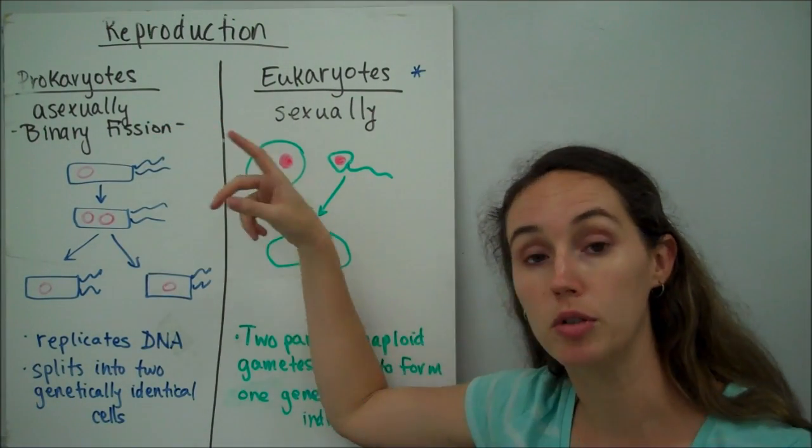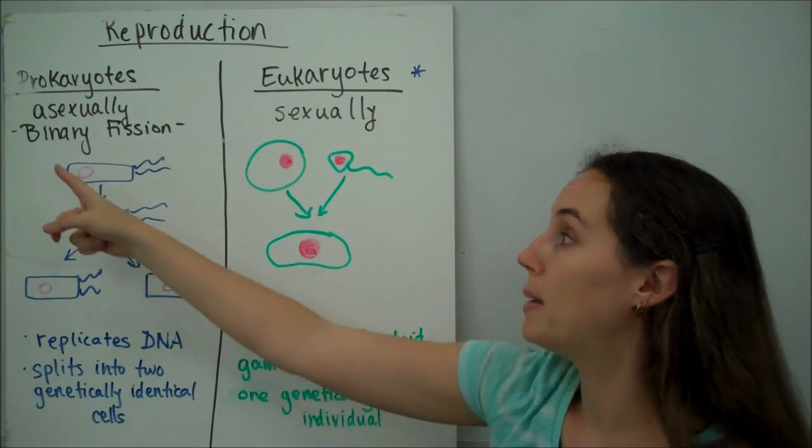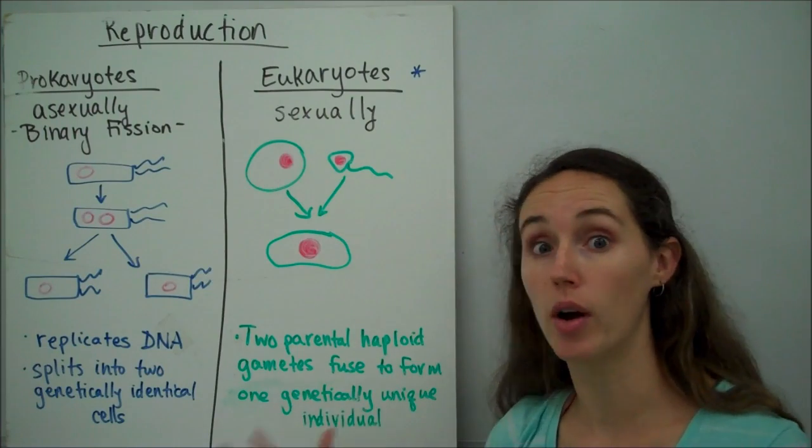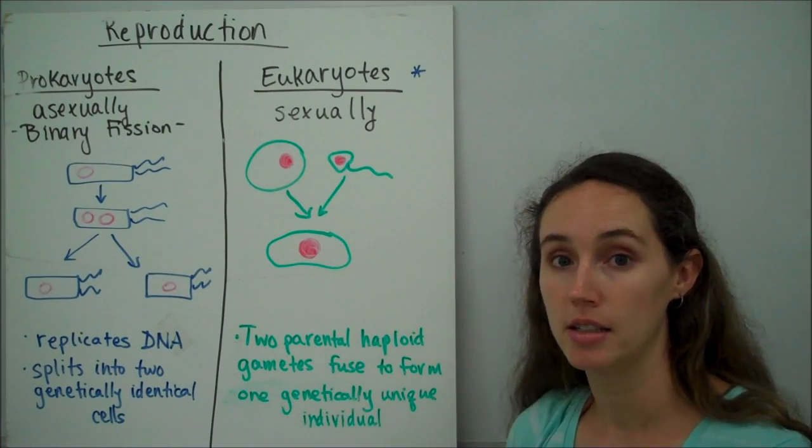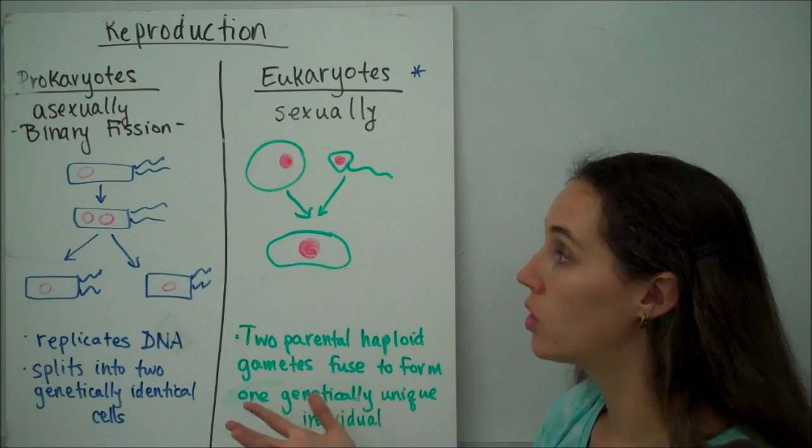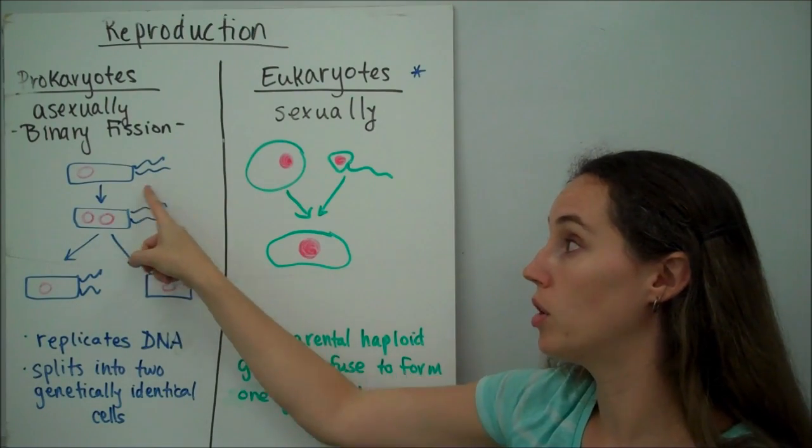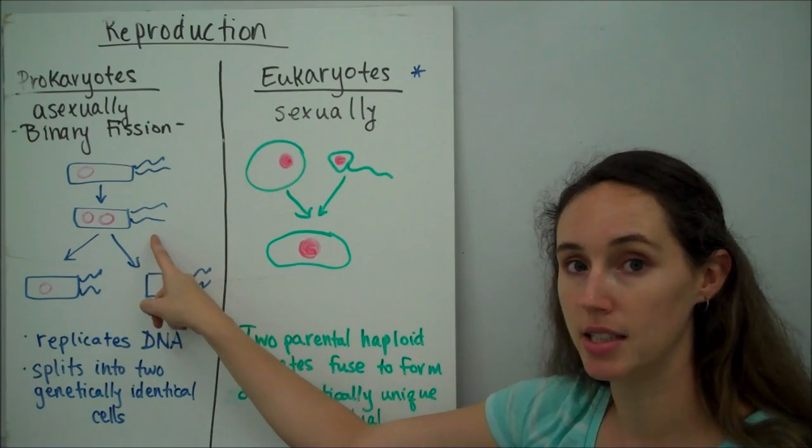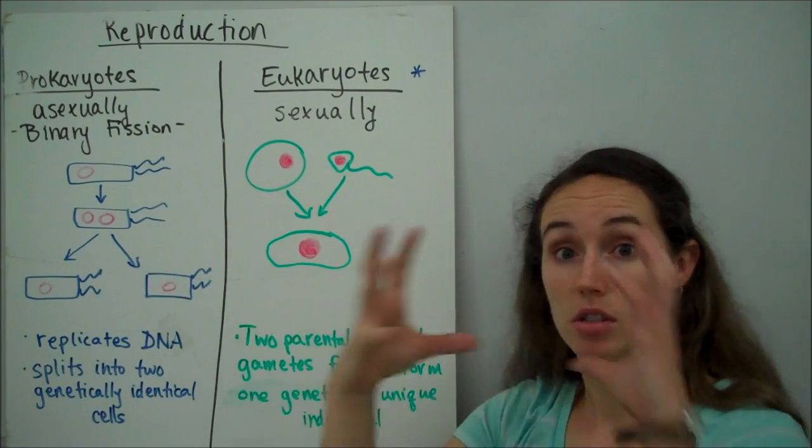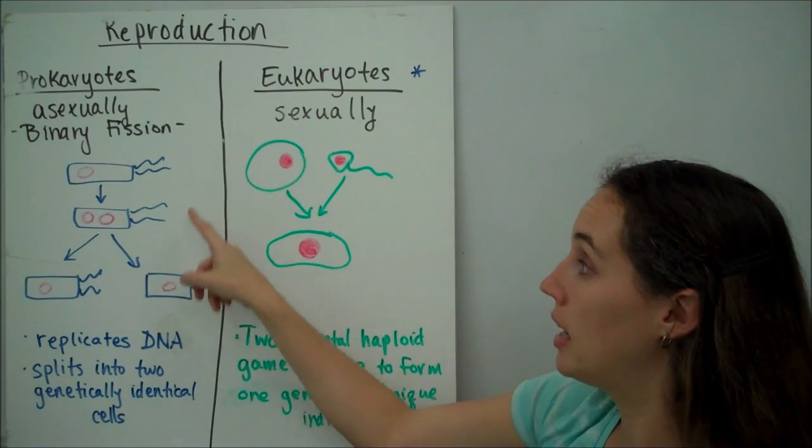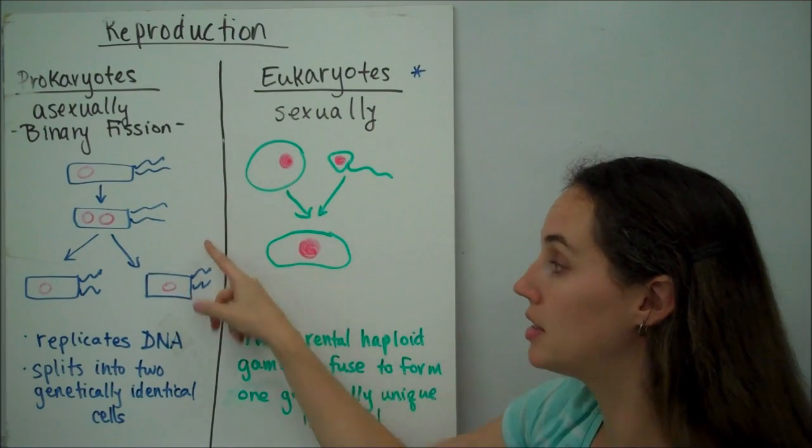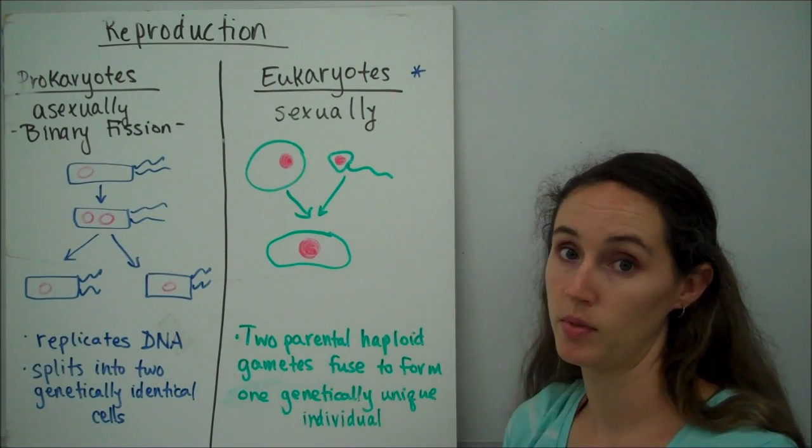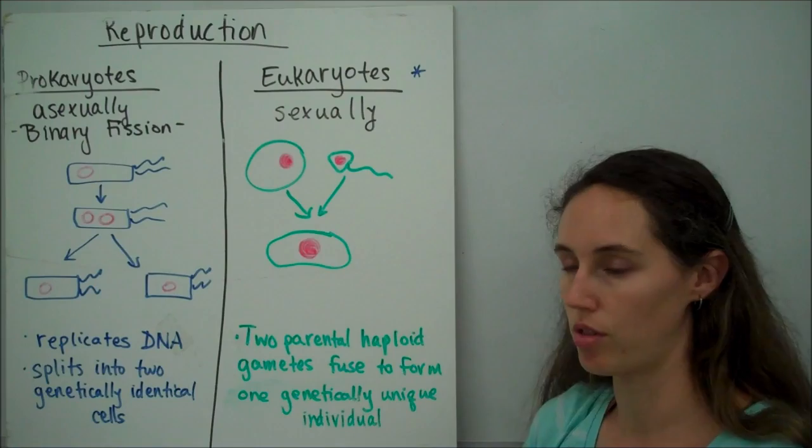Prokaryotes reproduce, or make more of themselves, through a process called binary fission. This is an asexual process, meaning you don't have to combine new DNA to make your offspring. So in this, you have your original prokaryote with its circular chromosome, and it's going to replicate that DNA, and then it's just going to split in two. So now we have, we've replicated our DNA, and now we have two genetically identical offspring. So they're exactly identical to the parent and to each other.